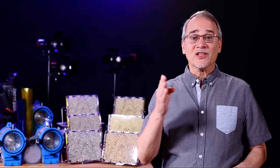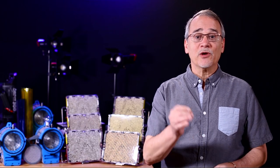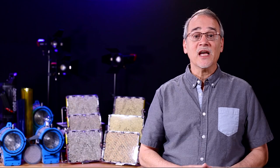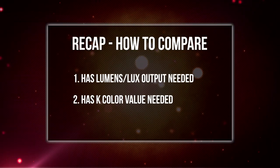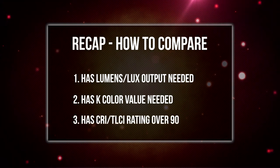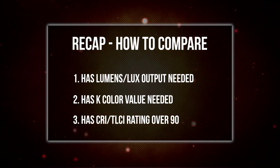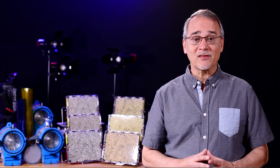Recap. When comparison shopping for lights, make sure to see that the lumens or lux is what you need, see that the K value of the lights is what you want, and get something with a CRI or TLCI rating over 90. Now let's look at other options you need to look for in choosing lights.